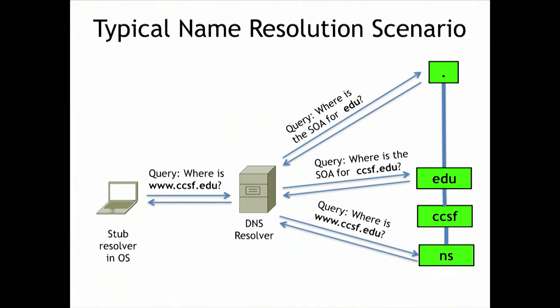In a typical name resolution scenario, you open a browser — that's your stub resolver — and ask for www.ccsf.edu. The resolver checks if it knows; if not, it looks for the authoritative server for ccsf. If it doesn't know that, it looks for .edu, and if not that, it asks root where .edu is. It asks .edu where ccsf.edu is, then asks the CCSF name server for the specific device. That's three queries in a normal case, but the end user just sees one query answered in a fraction of a second.